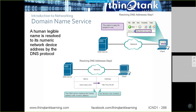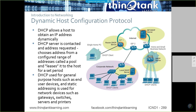DHCP allows a host to obtain IP address information automatically over the network. There's a four-step process to facilitate a DHCP request. A client that wants to gain access to the network but doesn't have an address assigned will send out a DHCP discover message to obtain a lease of IP information — IP address, subnet mask, gateway, and so on.